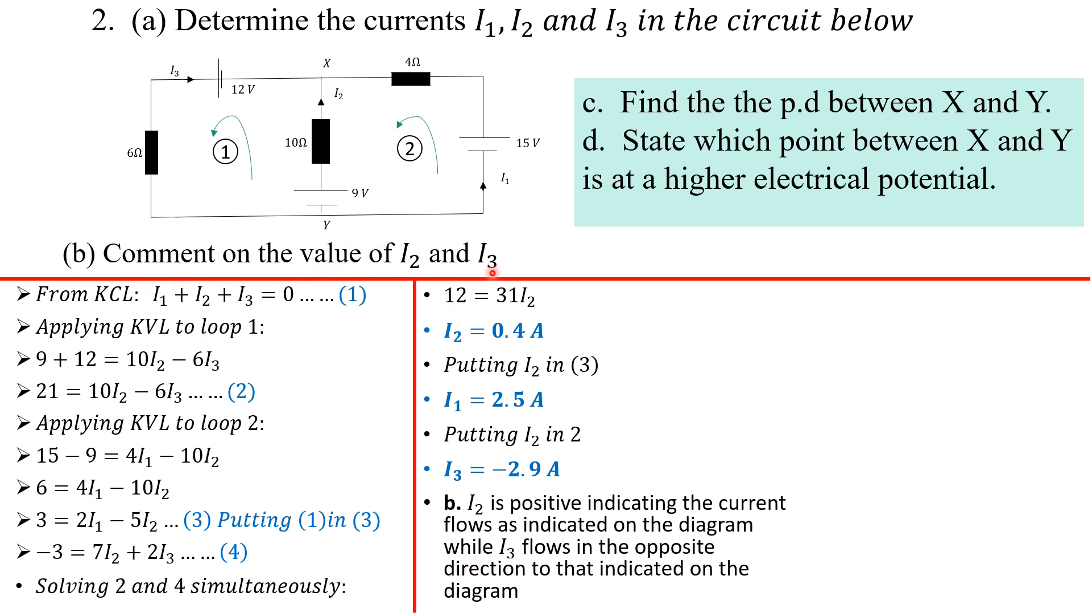The examiner says comment on the value of I2 and I3. I2 is positive, indicating the current flows as indicated on the diagram as the examiner has indicated. You notice that your I2 here is positive, so you tell the examiner I2 actually flows in the direction indicated on the diagram. But I3, notice that it's negative, so the examiner got this direction wrong. I3 flows opposite the direction indicated on the diagram.